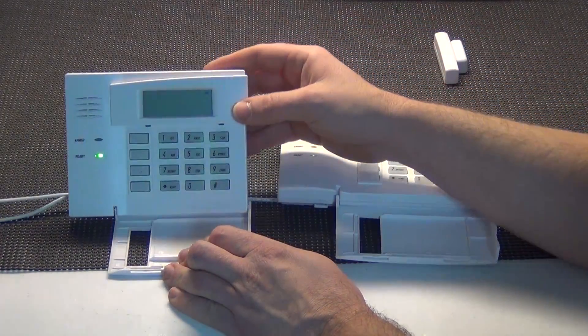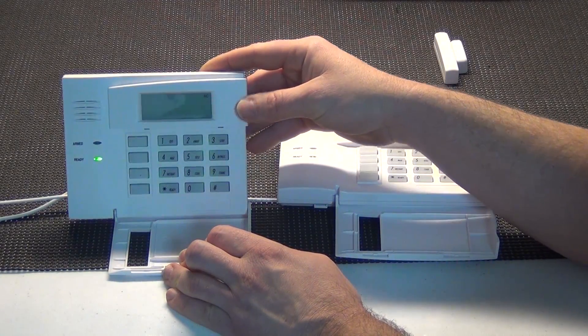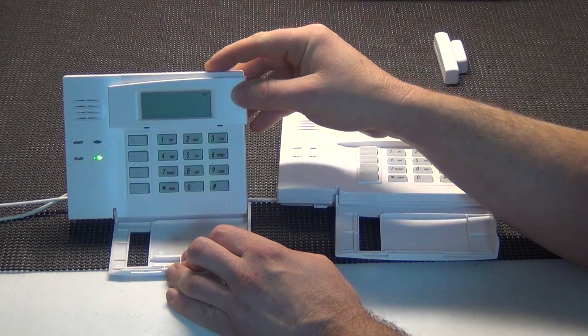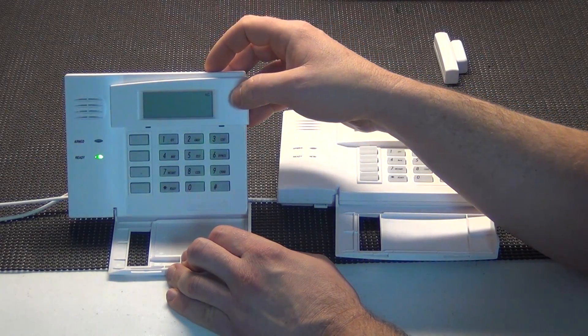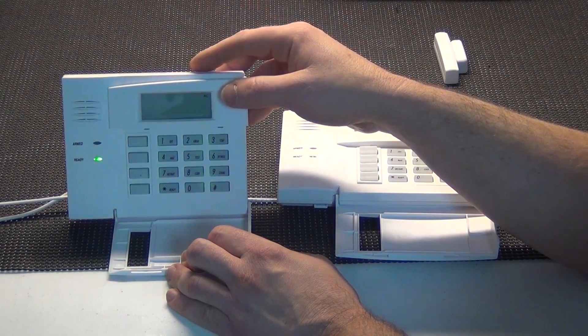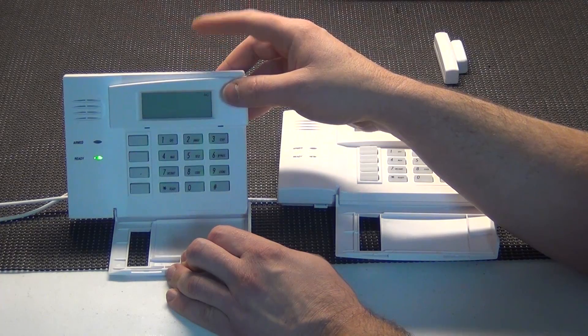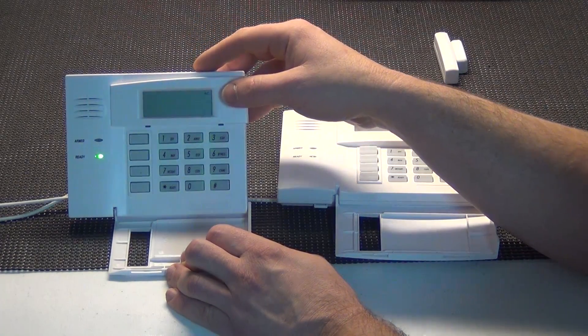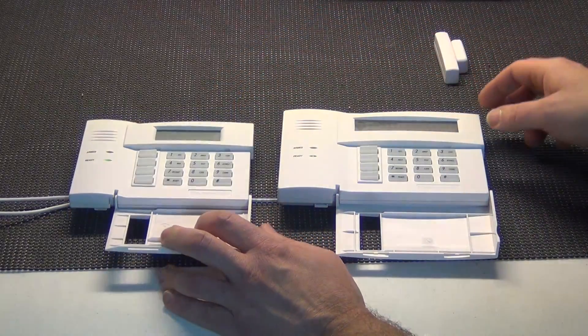This one, the 6150, as you can see, it's pretty much blank right now. It's not displaying the alpha characters like it did on the 6160. It does say AC up here in the corner. Now the 6150 will have some fixed words for like arming state and some trouble conditions, but you're not going to get a full alpha display like you will on the 6160.